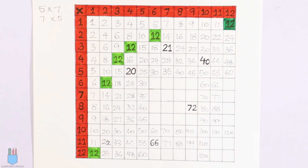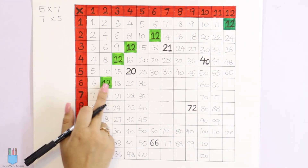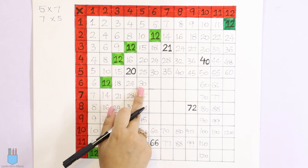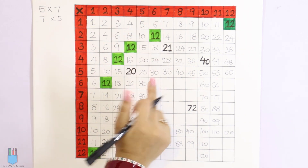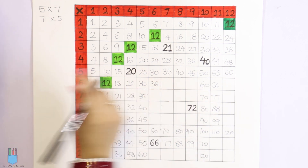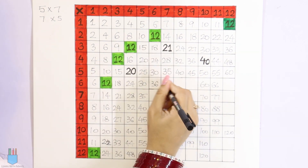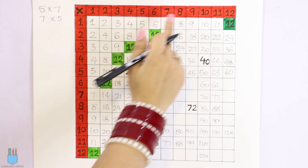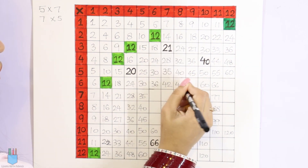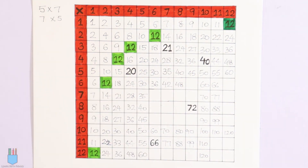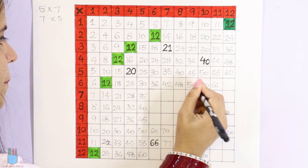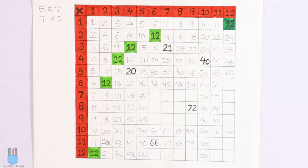Now we have 5 and 6. So for the 6 times table: 6, 12, 18, 24, 30 — already filled. 6 into 6 is 36, then 6 into 7 is 42, then 6 into 8 is 48, then 6 into 9 is 54. Then 60, 66 — already filled. Next: 12 into 6 is 72.